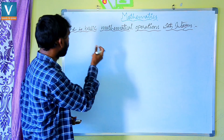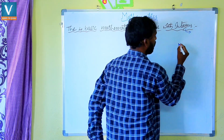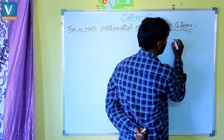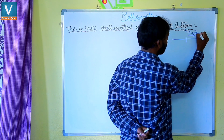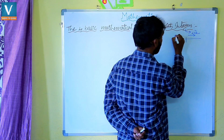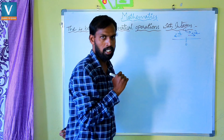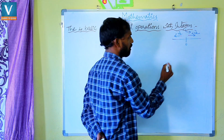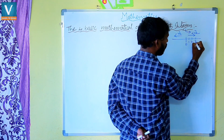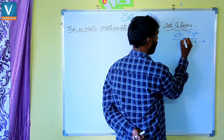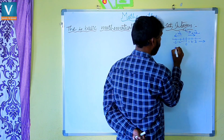Before going to this topic, let us once again recall what is the meaning of integers. Integers are nothing but the combination of positive numbers and negative numbers including zero. That means zero, and on the right side positive numbers 1, 2, 3 and so on, and on the left side minus 1, minus 2, minus 3 and so on.